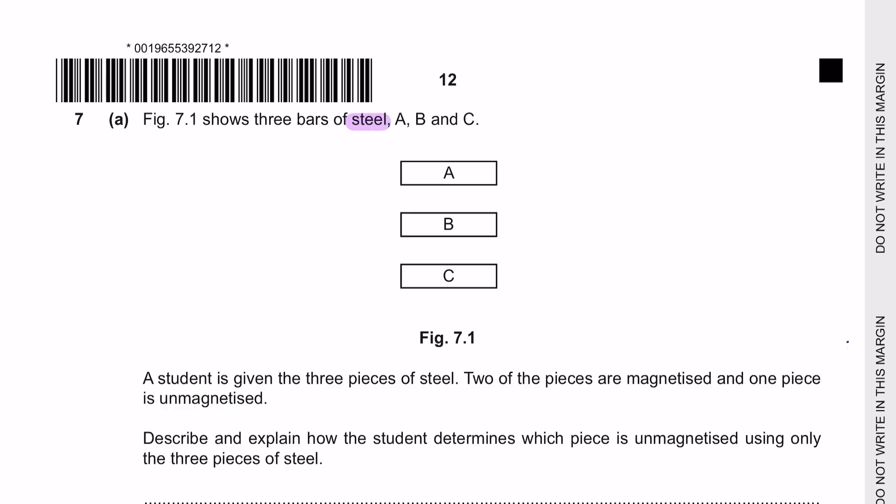A student is given the three pieces of steel. Two of the pieces are magnetized and one piece is unmagnetized. Describe and explain how the student determines which piece is unmagnetized using only the three pieces of steel. Let's assume that the first two bars of the steel are magnetized, meaning that they have north and south pole. However, the third bar of steel is unmagnetized.